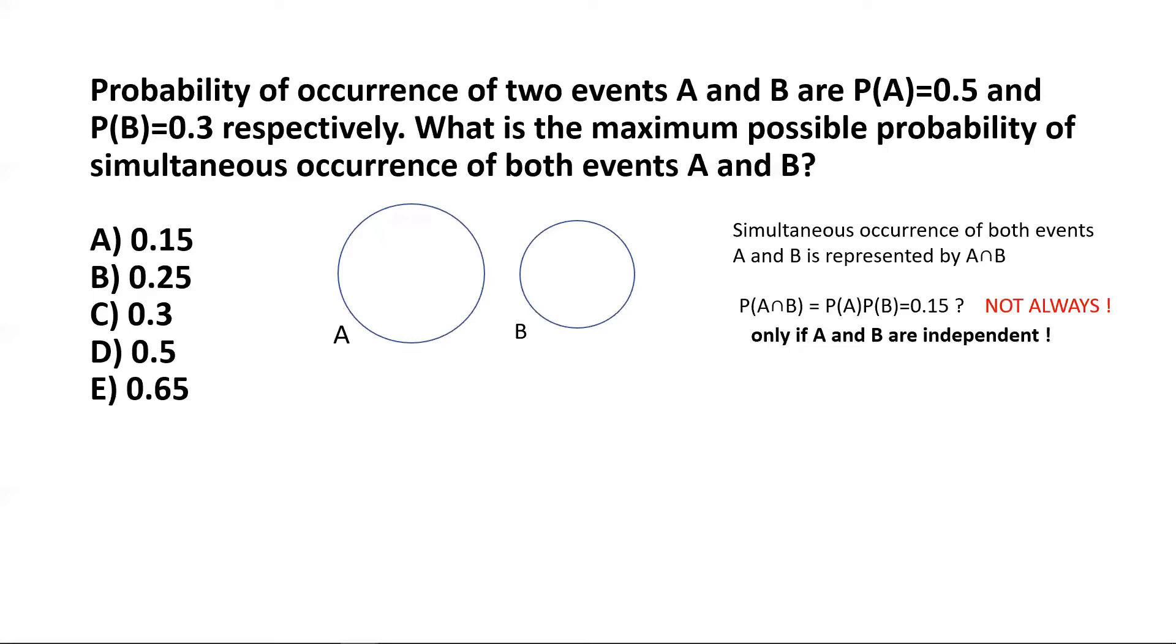So if the events are as depicted here they have no overlap. So the A intersection B, the simultaneous occurrence of both events, would be represented in the Venn diagram by the overlap of these two circles. And right now the way I have drawn these circles they have no overlap. So that means essentially the probability of simultaneous occurrence of these two events is zero because there's no overlap between A and B.